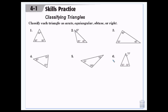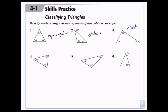So if you go to your packet on the very first page, you have that first section. We're going to classify these as acute, equiangular, obtuse, or right. So this first one would be equiangular. And we'll look at all of our angles — we've got a 95-degree angle, which is greater than 90, so this one is going to be obtuse. We have an exactly 90, so we have a right. All three are less than 90, so acute.